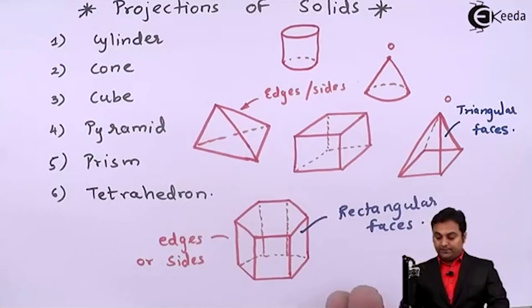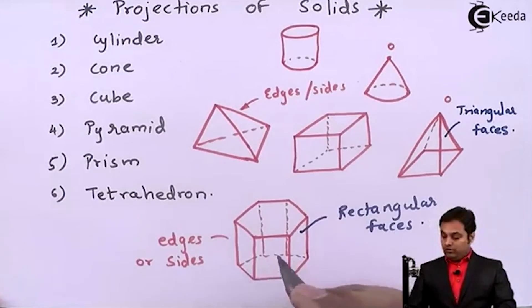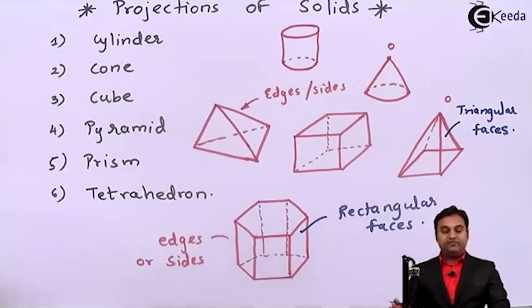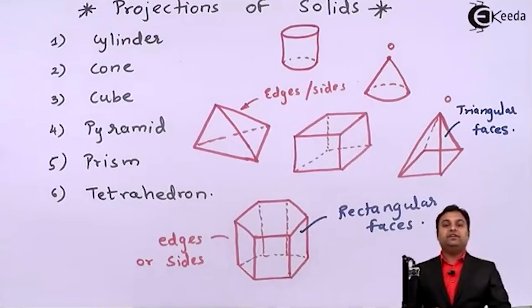If the prism is of hexagonal shape it will have 6 edges then it will have 6 rectangular faces. If there is square prism then it will have 4 base edges, 4 sides and we can say 4 rectangular faces. So in short here I have described how many kinds of solids are there.